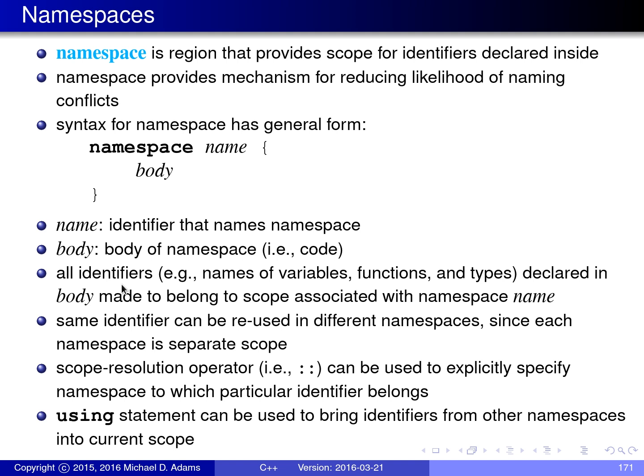For example, names of variables, functions, and types — all of these identifiers will be made to belong to that namespace's scope. The same identifier can be reused in different namespaces because each namespace is a separate scope.